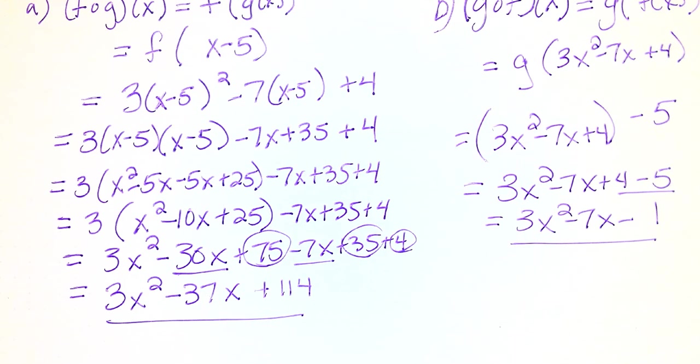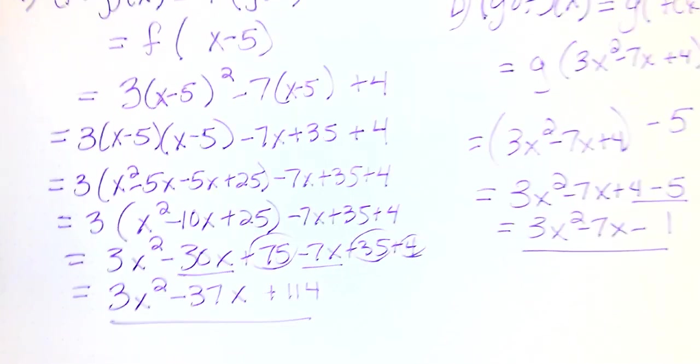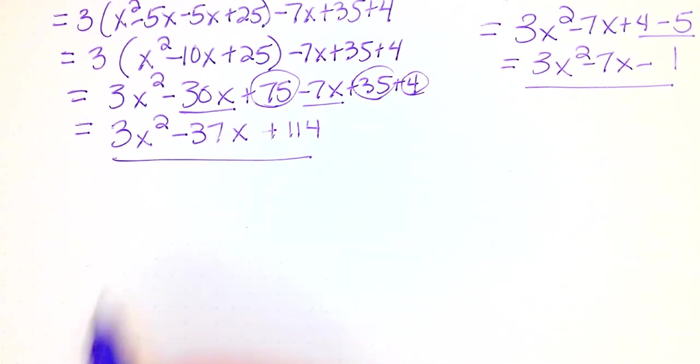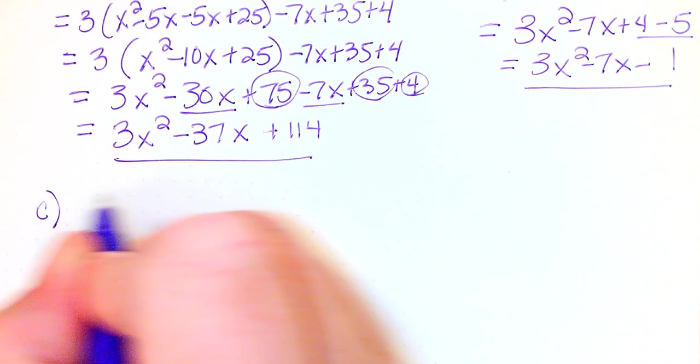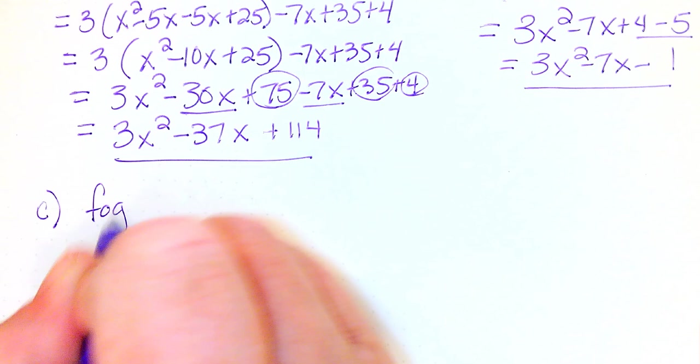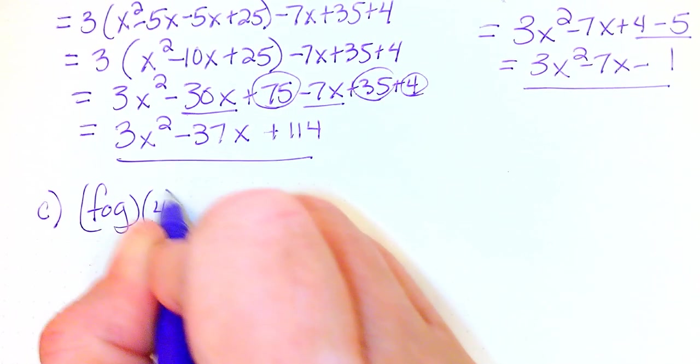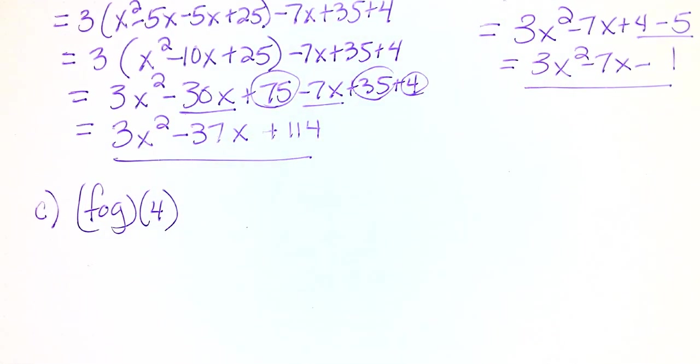I do want to show you real quick that you can do, after you've gotten both of these, you could find a function value. So let's say we wanted, I'm going to do a c part here, f of g of, let's do that 4 again, f of g of 4.